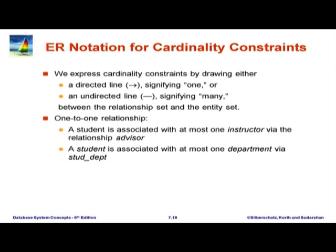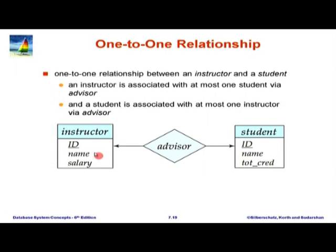Many-to-one is the symmetric version of one-to-many with sides flipped. Many-to-many is the most general — anything can be mapped to any number of things on the other side. For example, A1 may map to two things, B1 and B3 may map to two things each, and B4 may not be mapped to anything.